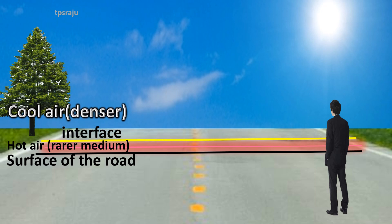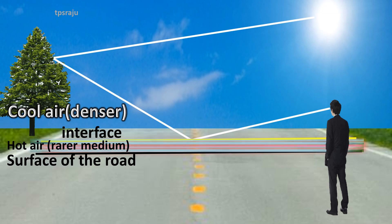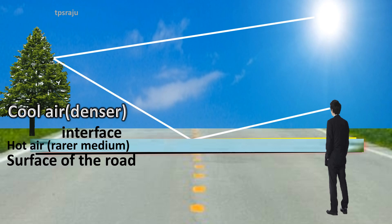When the light from tall object such as a tree or from sky passes from cool air to hot air, it takes a curved path because of total internal reflection. This appears to the observer as if light ray is reflected from the ground. Hence we feel the illusion of water being present on the road.